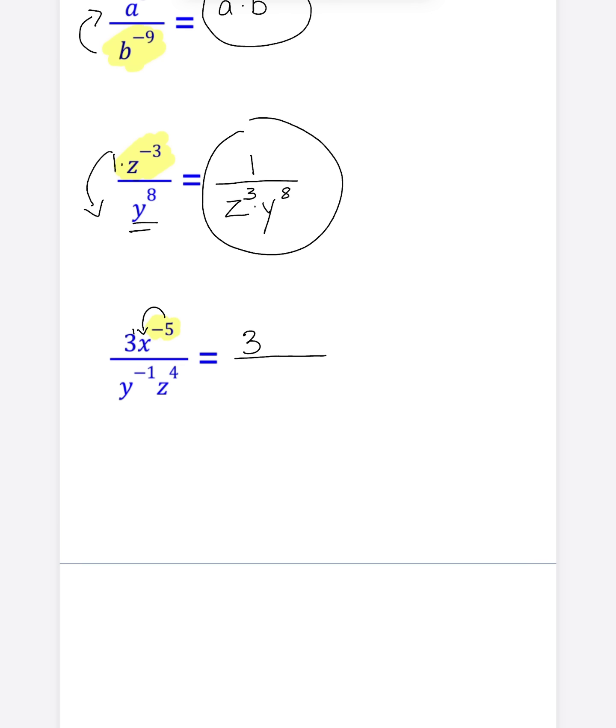The X does have a negative exponent. So what do we do with it? Two steps. Move it to the other side, make the exponent positive. This Y has a negative exponent. So what do we do? Move it to the other side, make the exponent positive.